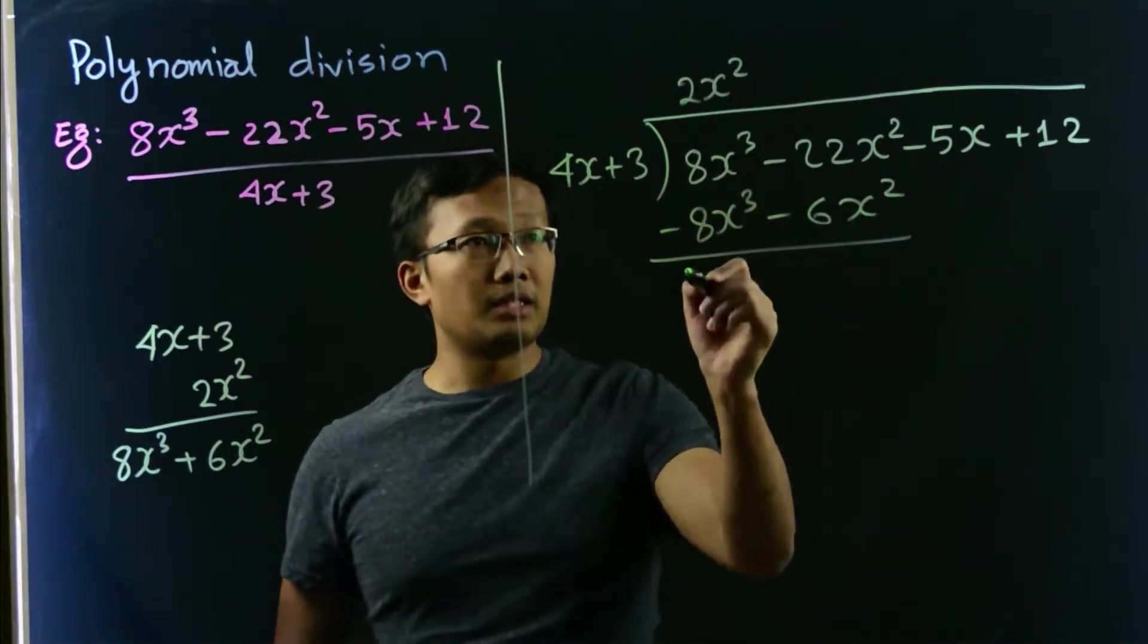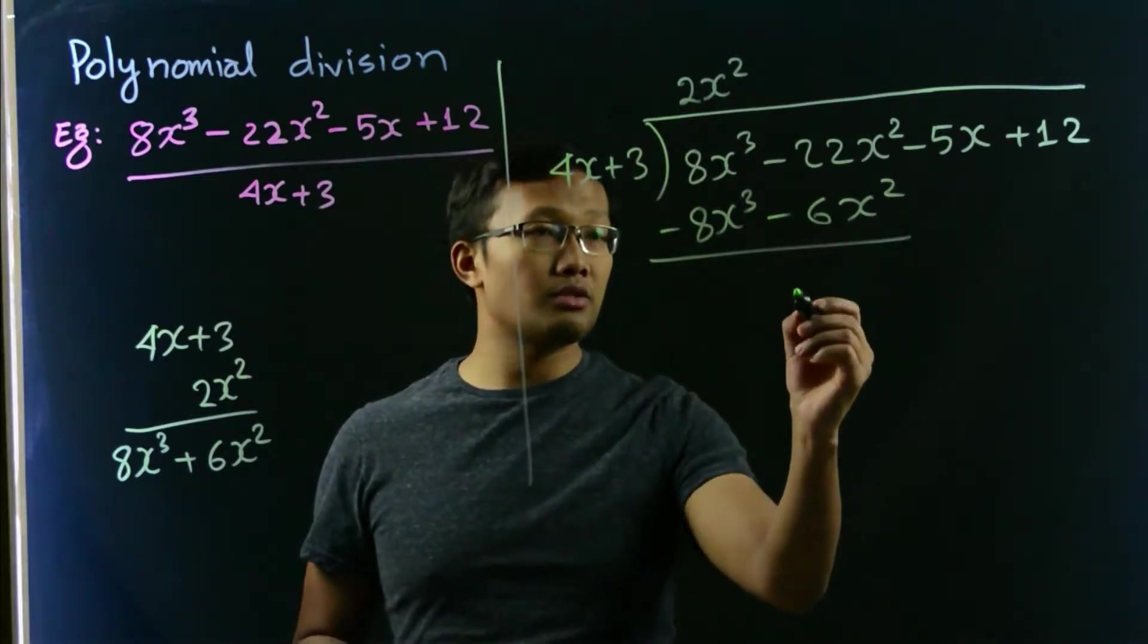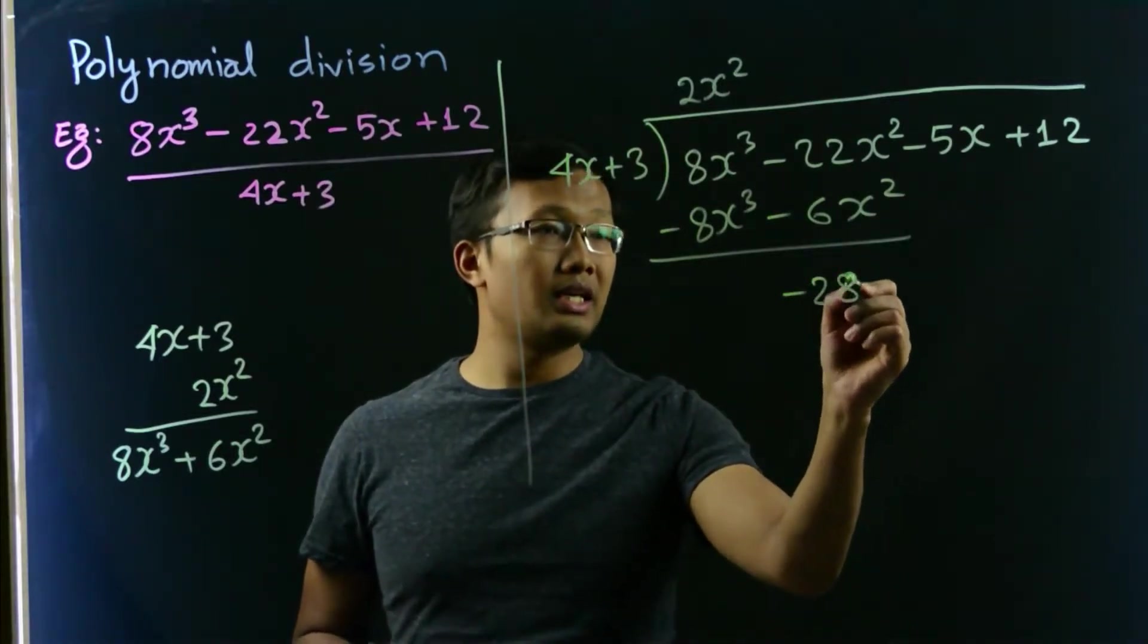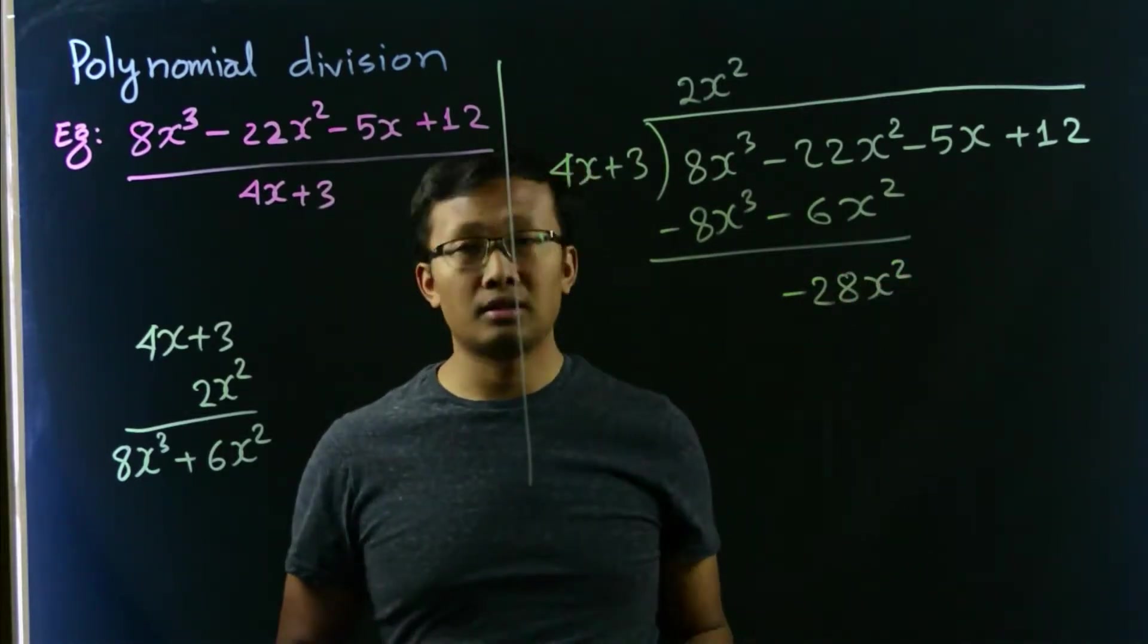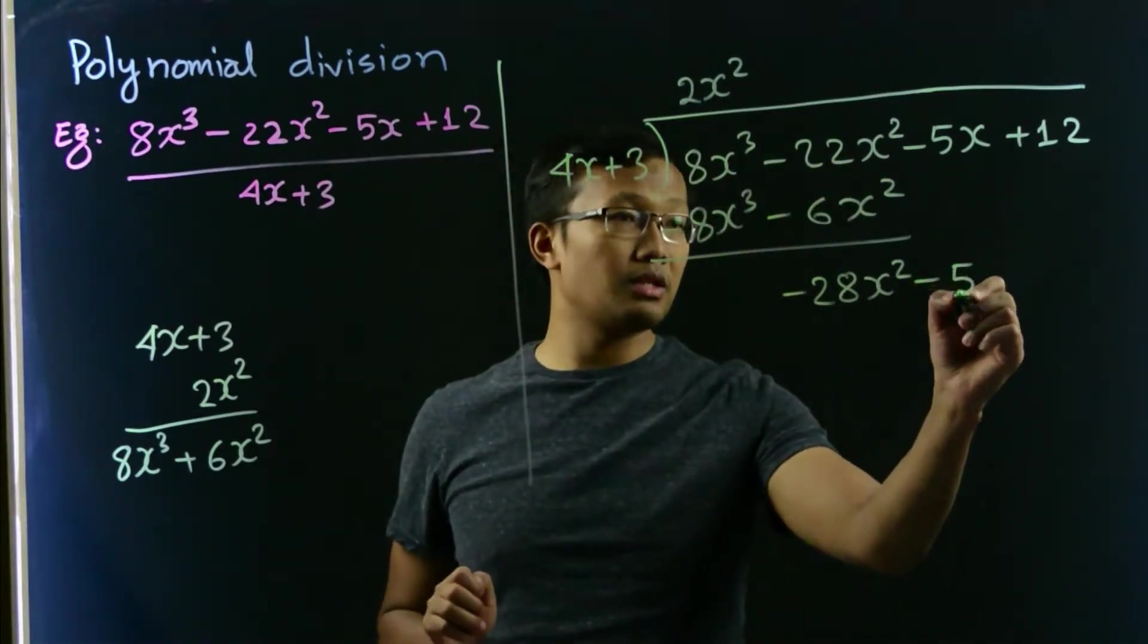So this gets cancelled. 22x squared minus 6x squared, so that's negative 28x squared, and bring down the negative 5x, which is this one.